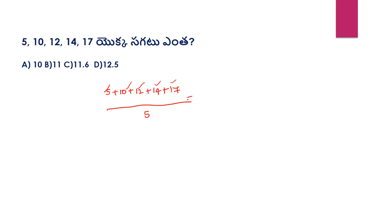5 plus 10 is 15, 15 plus 12 is 27, 27 plus 14 is 41, 41 plus 17 is 58. So 58 divided by 5.